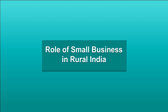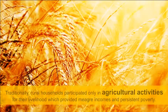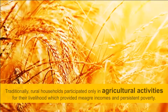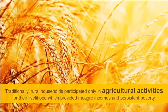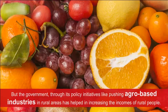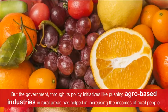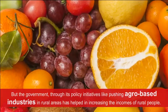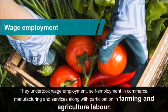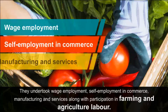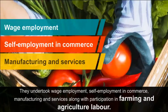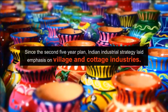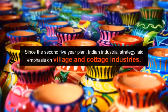Role of Small Business in Rural India: Traditionally, rural households participated only in agricultural activities for their livelihood, which provided mere incomes and persistent poverty. But the government, through policy initiatives like pushing agro-based industries in rural areas, has helped increase the incomes of rural people. They undertook wage employment, self-employment in commerce, manufacturing and services, along with participation in farming and agricultural labor. Since the second five-year plan, Indian industrial strategy laid emphasis on village and cottage industries.